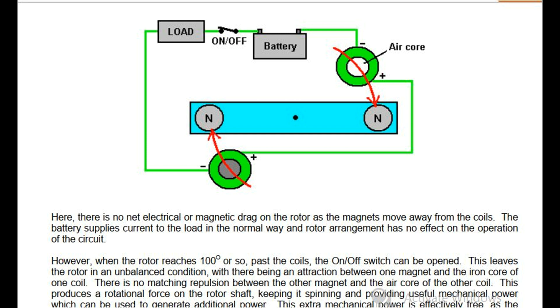However, when the rotor reaches 100 degrees or so past the coils, the on-off switch can be opened. This leaves the rotor in an unbalanced condition, with there being an attraction between one magnet and the iron core of one coil.